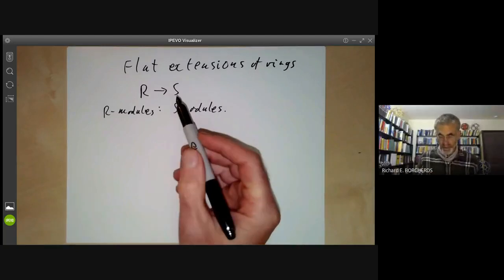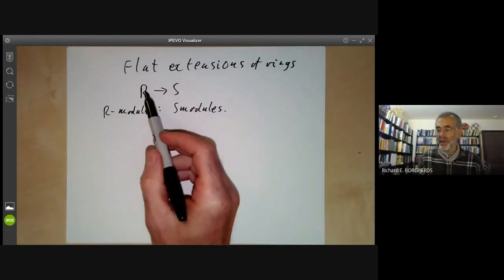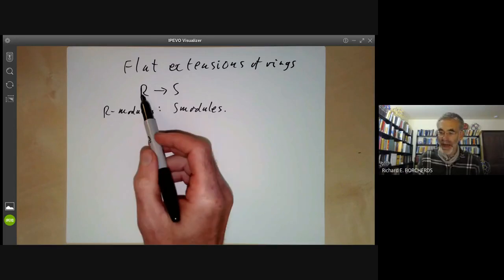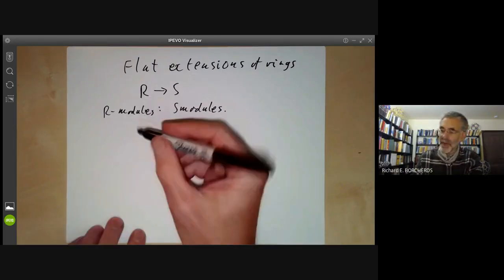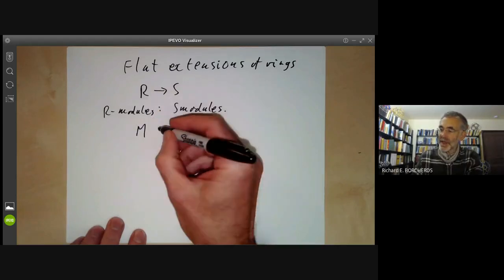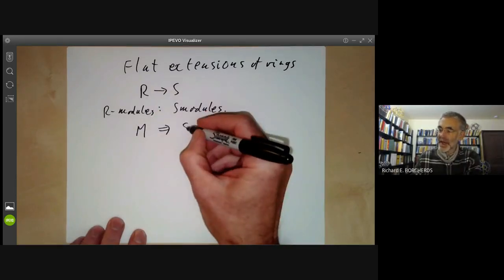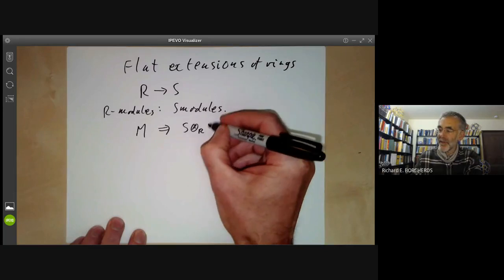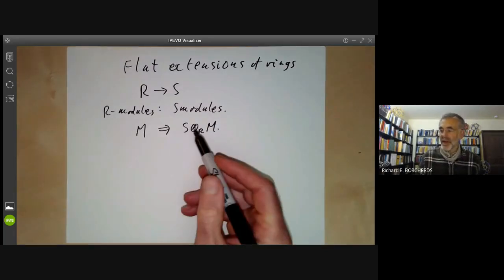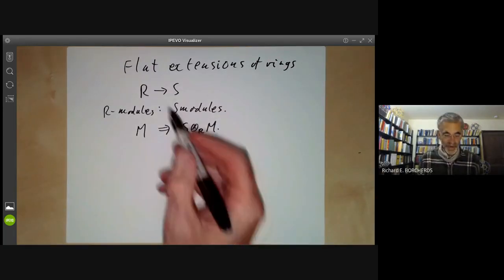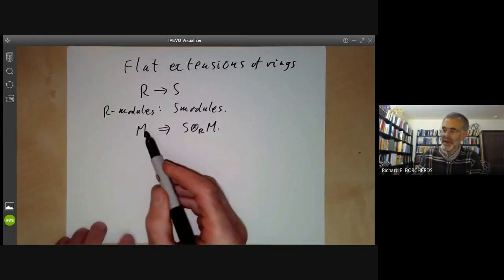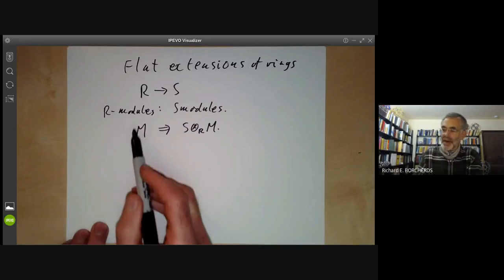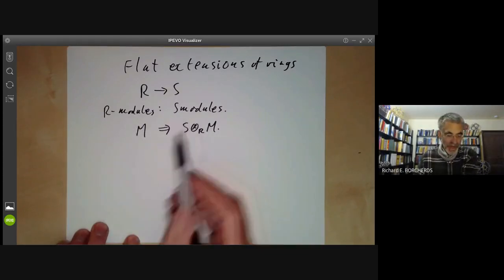There are obvious ways to convert an S-module to an R-module just by restricting the ring action. On the other hand, if you have an R-module M, we can convert it to an S-module by taking S tensor over R of M. This is in fact an adjoint to the restriction functor. And what we want to know is how the corresponding modules over S are related.